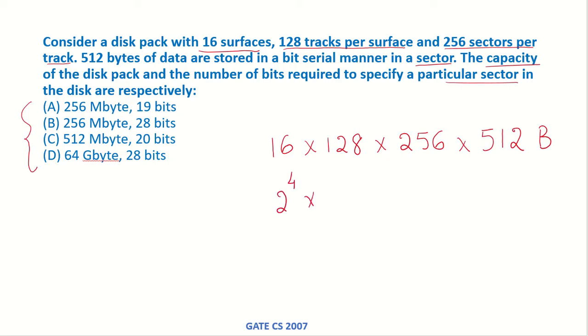This is 2 to the power of 4 into 2 to the power of 7 into 2 to the power of 8 into 2 to the power of 9 bytes. If we add all of this we get 4 plus 7, 11, 11 plus 8, 19 and 19 plus 9 which is 28.